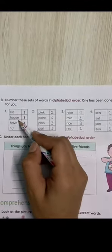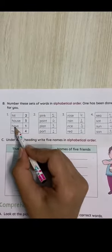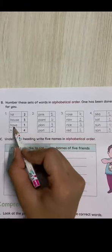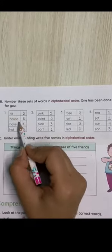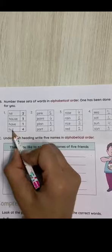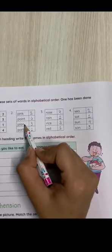Hit, house, have, and hut. All the first letters are H, then we will check the second letters. A comes first, then I number two, then O number three, then U number four.